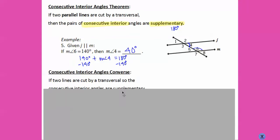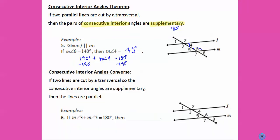We can also use the converse: if we know consecutive interior angles are supplementary, then that proves that the lines are parallel. So if angle three plus angle five equals 180 degrees, then line J is parallel to line M.